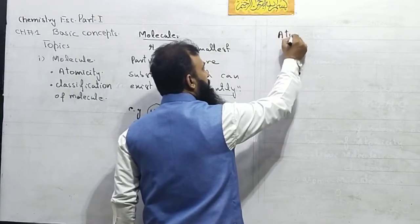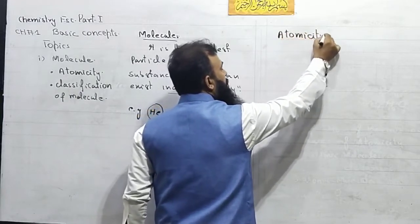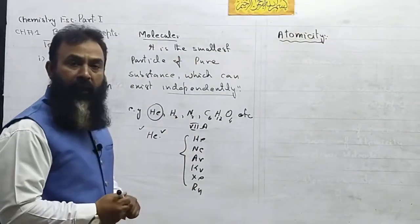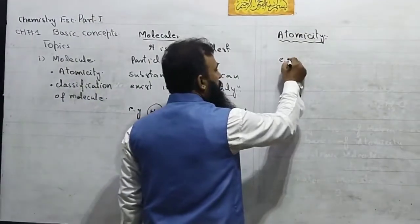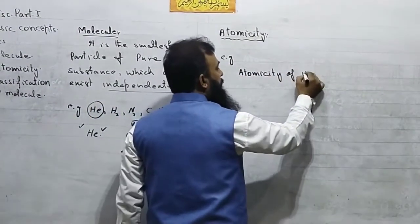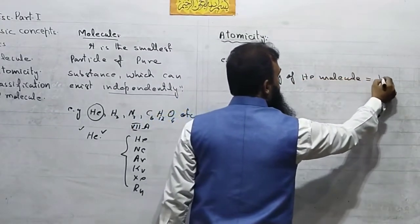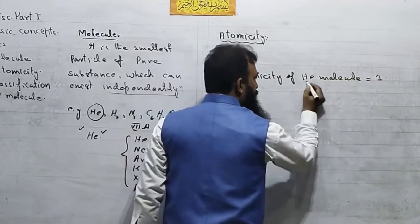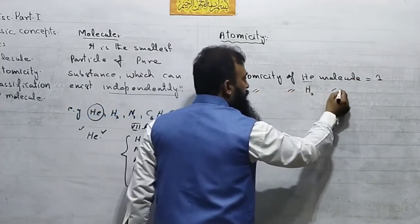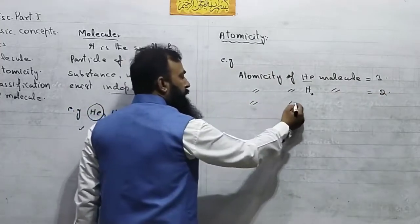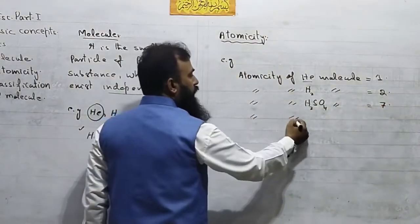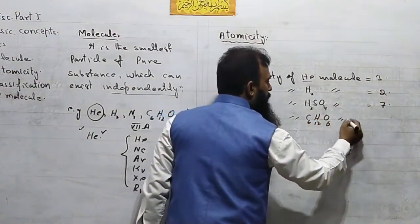Now, atomicity: we define it as the number of atoms present in a molecule, which is called its atomicity. For example, the atomicity of helium is one because a helium molecule consists of only one atom. The atomicity of hydrogen is two, the atomicity of sulfuric acid is seven, and the atomicity of glucose is 24.